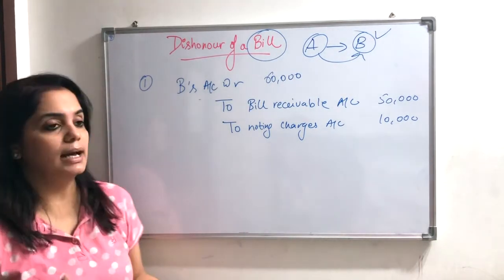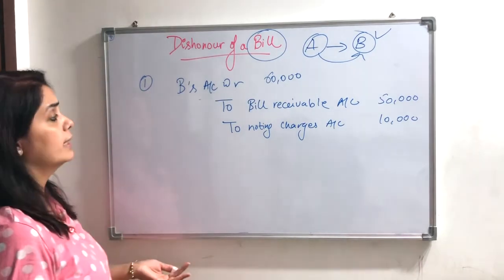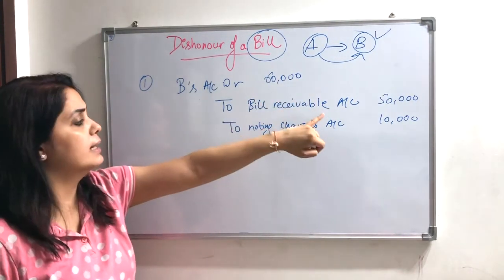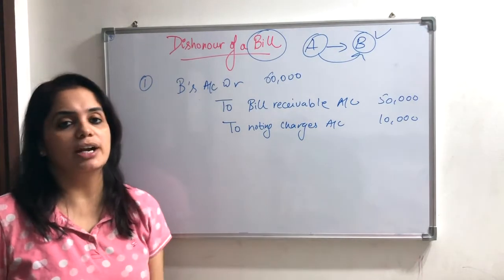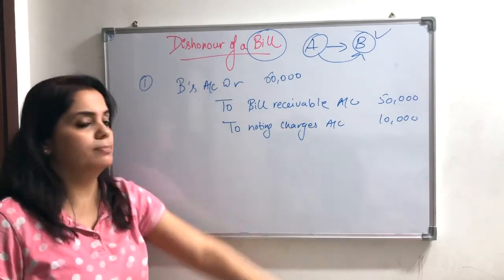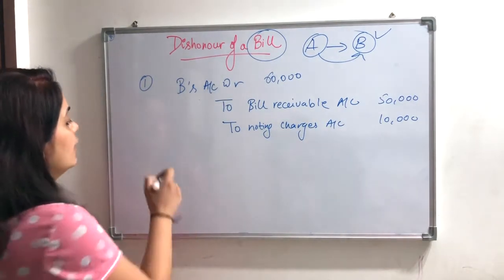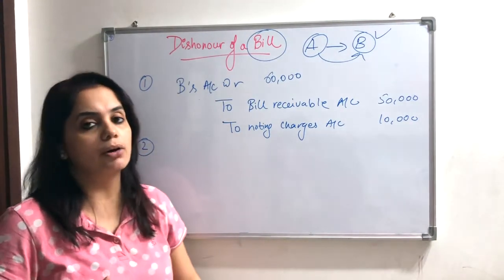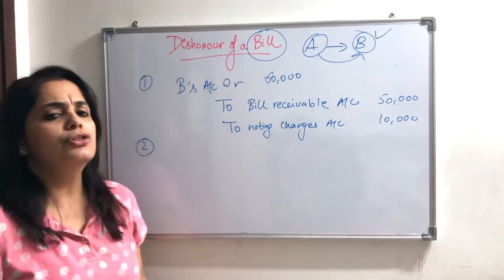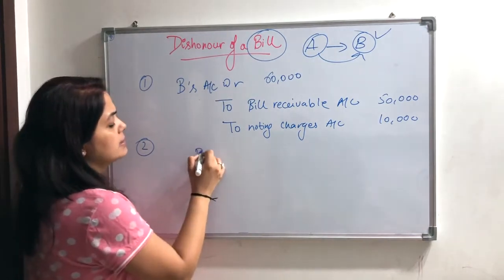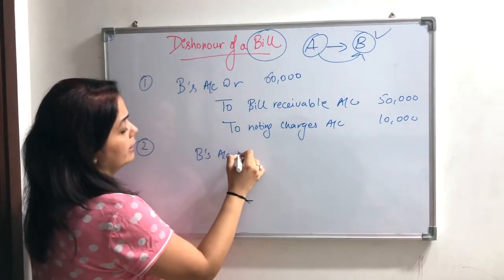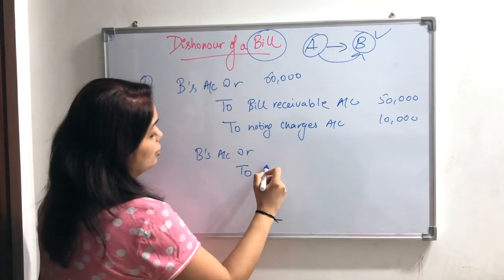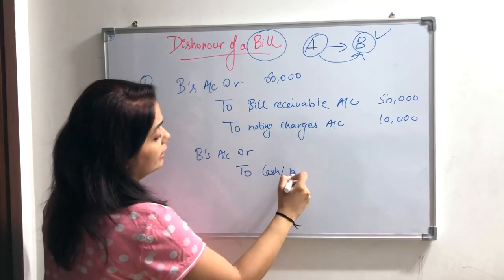Now, if money is received, B's account is debited and A is liable to pay Rs. 60,000 — that is Rs. 50,000 plus noting charges of Rs. 10,000. Now, what would happen if A's bill was discounted by the bank? In that case, the simple entry is: B's account debited to Cash or Bank account.